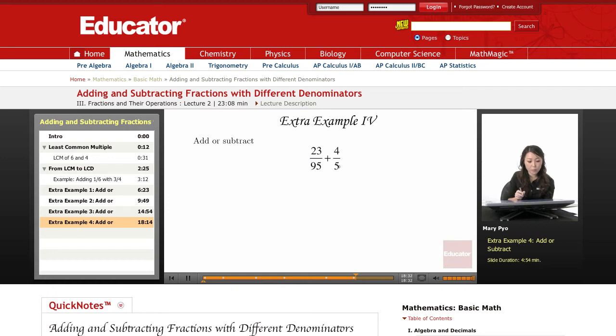So I have to look for the common denominator. Now for 95, I can either look for the LCM, the least common denominator or least common multiple between 95 and 5, or I can list all the multiples out and see the smallest common multiple.